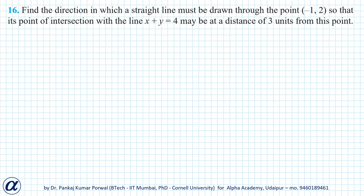In this question, we want to find the direction in which a straight line must be drawn through a point so that its point of intersection with the line x plus y equals 4 may be at a distance of 3 units from this point.